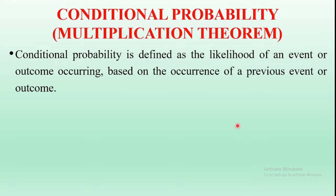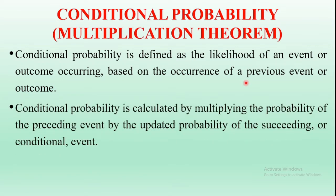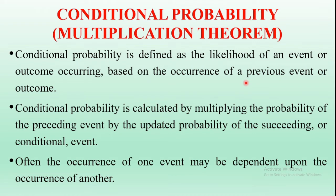Conditional probability is defined as the likelihood of an event occurring based on the occurrence of a previous event. Conditional probability is calculated by multiplying the probability of the preceding event by the updated probability of the succeeding event. Often the occurrence of one event may depend upon the occurrence of another event, and that gives rise to conditional probability.